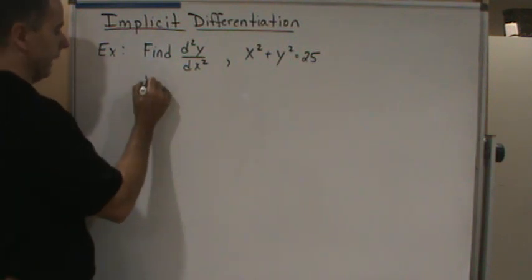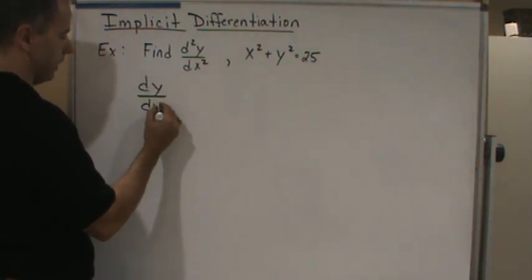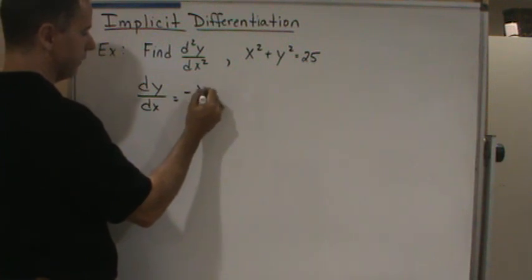we found dy/dx, right? So we found the first derivative, and we know that dy/dx is equal to negative x over y.